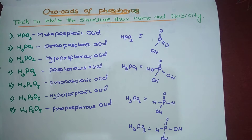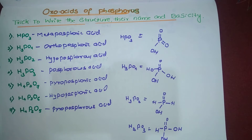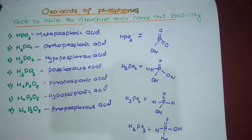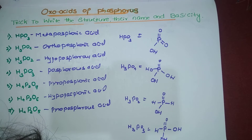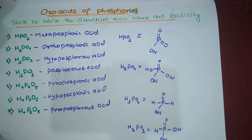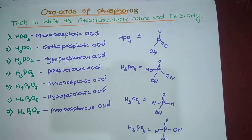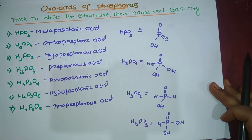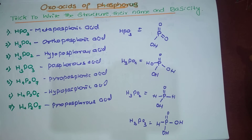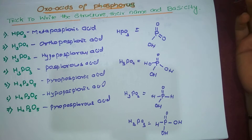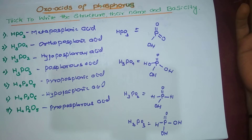Let us first go with the basicity. Almost all oxo acids have a basicity. Basicity refers to how many protons from the acid can be replaced by a base when the acid reacts with a base. In the structures, hydrogen bonded to oxygen (the OH group) can be ionizable - it can come out as an H⁺ ion and be replaced by the base.